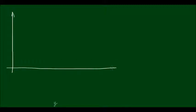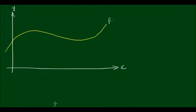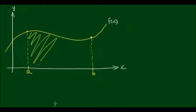Let me begin by drawing a set of axes — we have the vertical y-axis and a horizontal x-axis. Suppose we have a function that looks like this, which I'm going to call some function of x, f. We want to find the area between a couple of points on this axis — between this interval. I'll project this point down to be point a on the x-axis, and this point projected down will be point b. We want to find the area enclosed by this graph and this interval.